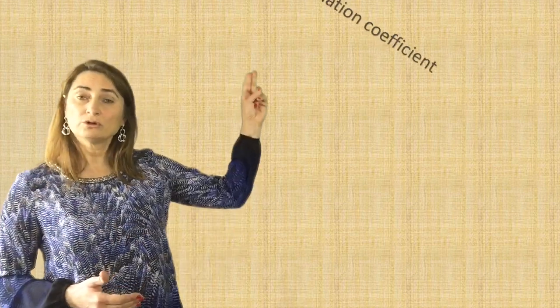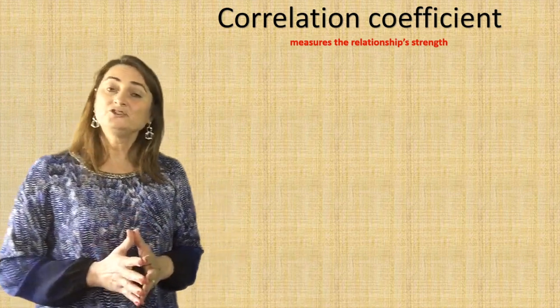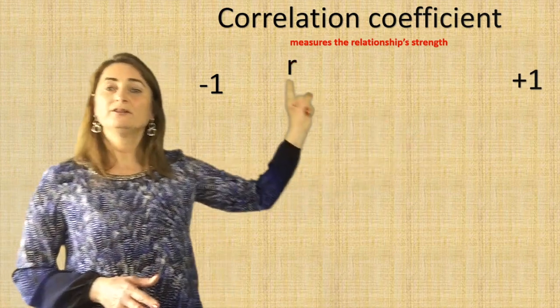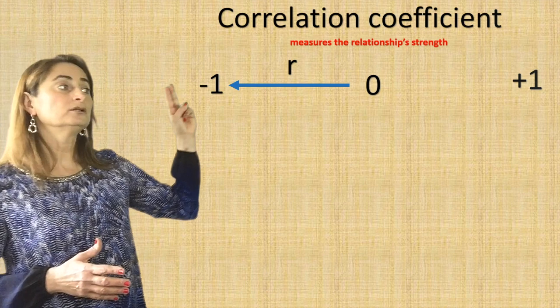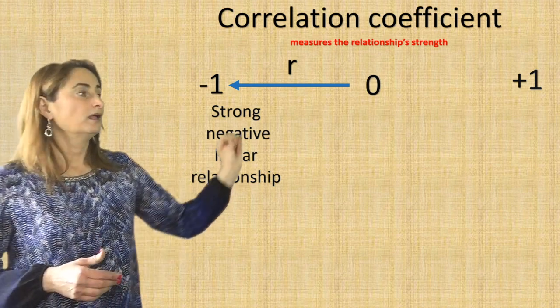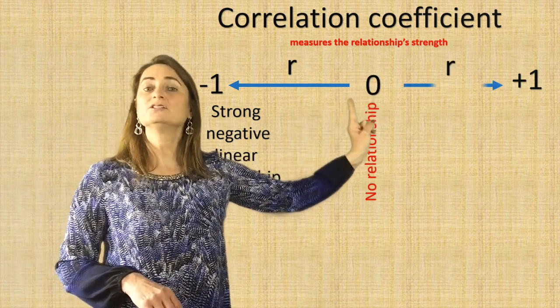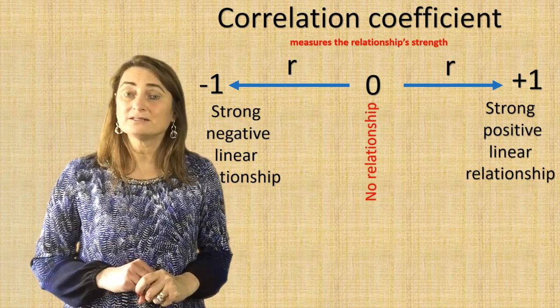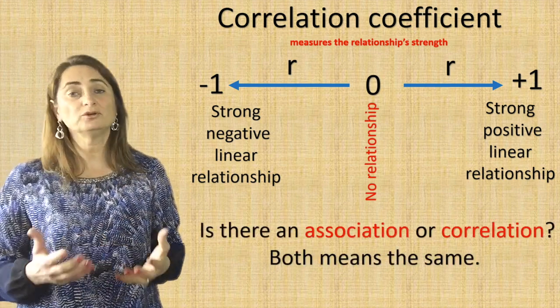There is a way to measure how good that line is at representing the data, or how strong the relationship is — it's called the correlation coefficient. If you have a graphing calculator, it will give you that right away. The range is from negative one to positive one, and it's referred to as R. If R is close to negative one, that means you have a strong negative linear correlation. If it's closer to zero, there is no correlation — no relationship. And if R is close to positive one, that means you have a strong positive correlation. You will hear the words correlation and association used interchangeably — they mean the same thing.